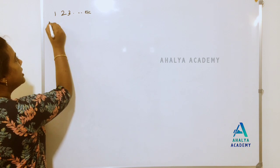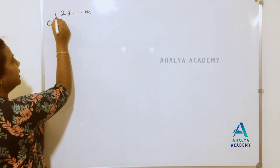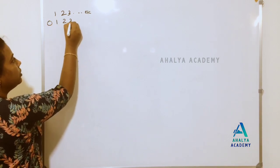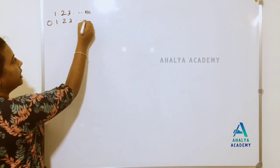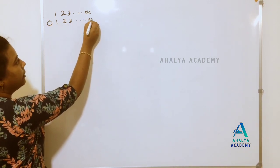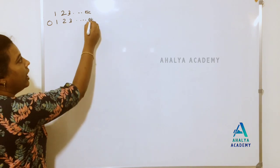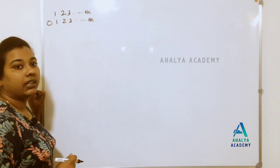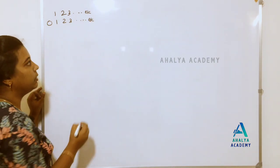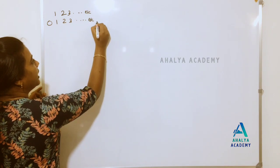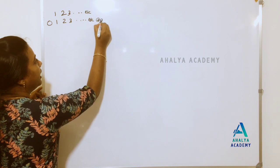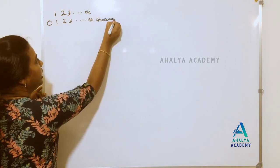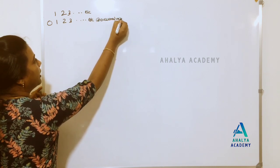The numbers 0, 1, 2, 3 — these numbers are called whole numbers.